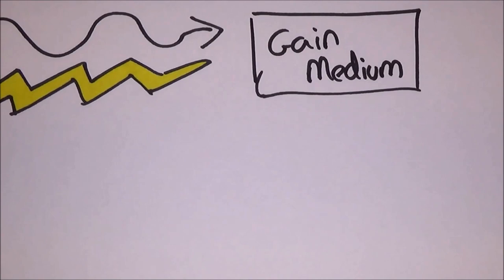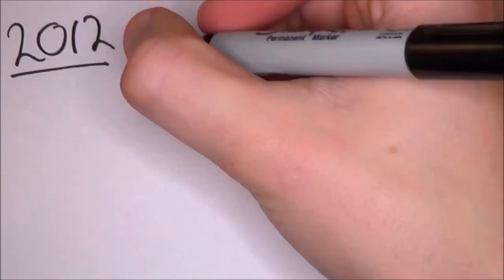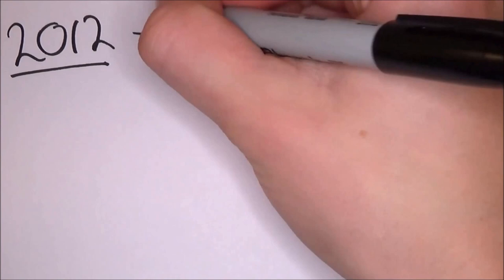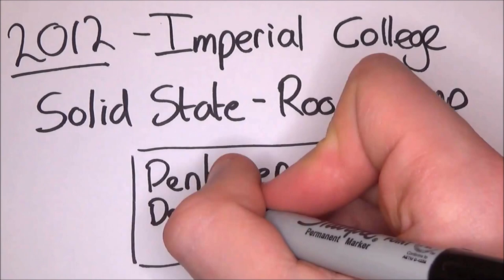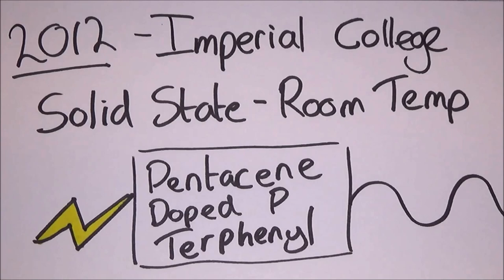In 1953, the maser was perfected. Then in 2012, Imperial College of London developed a way of making a solid-state maser that operates at room temperature by using pentacene doped p-terphenyl as a medium. This could actually lead to new maser technology and to a wide range of applications from communication to space exploration.